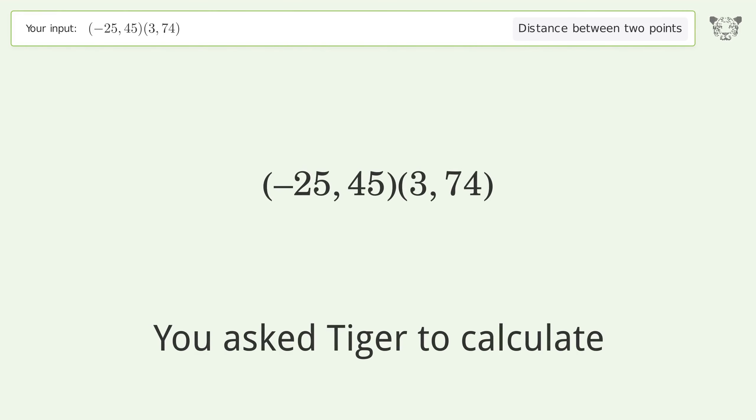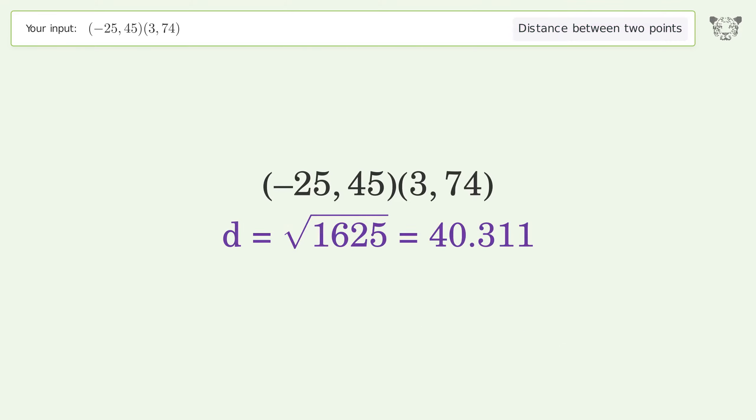You asked Tiger to calculate the distance between two points. The distance between the two points is the square root of 1625 or 40.311.